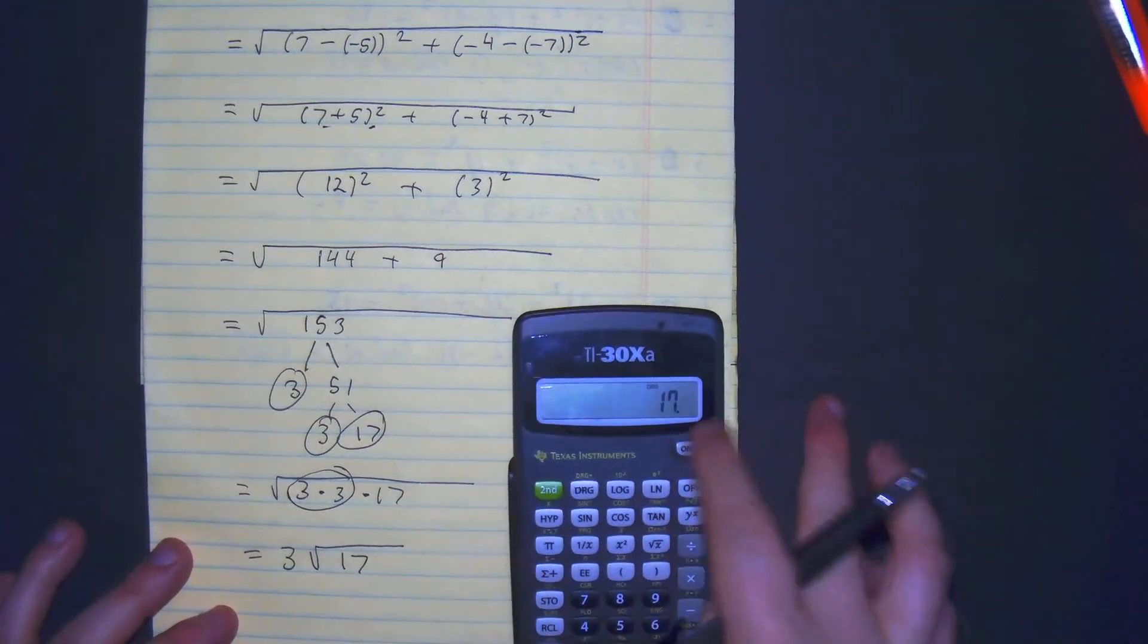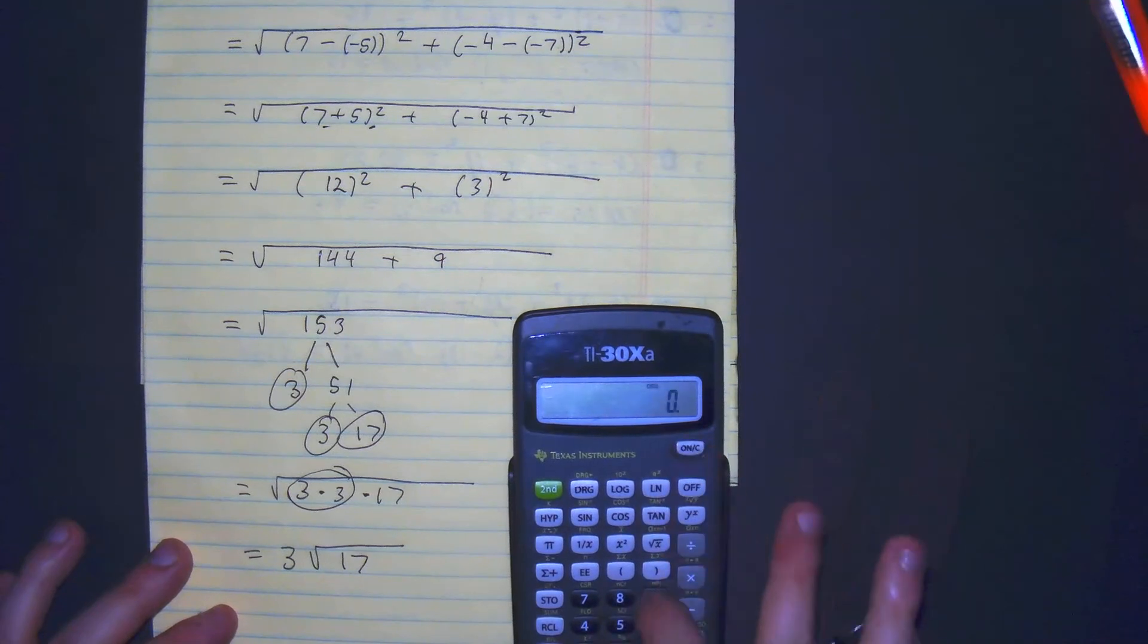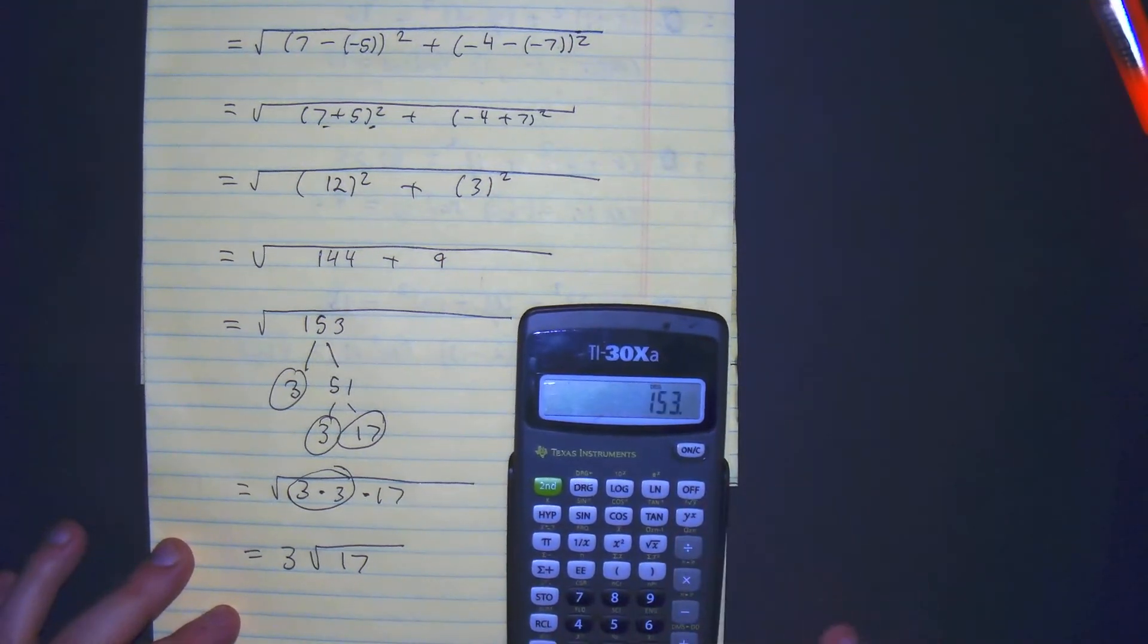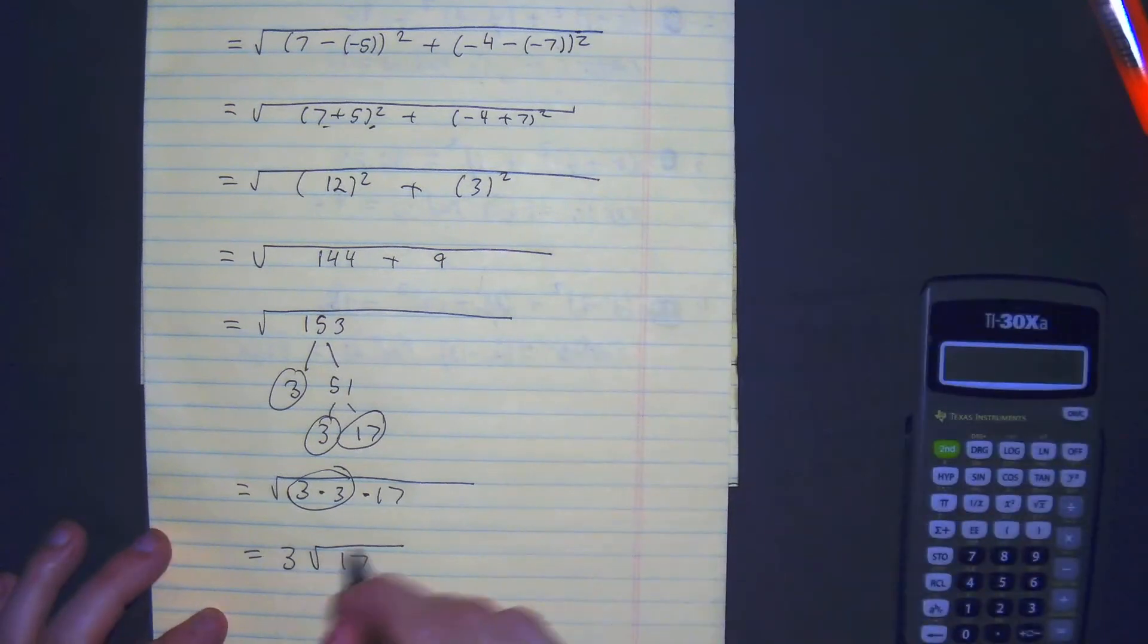And to check that I did this right, 9 times 17, 153, correct. So 3 square root 17.